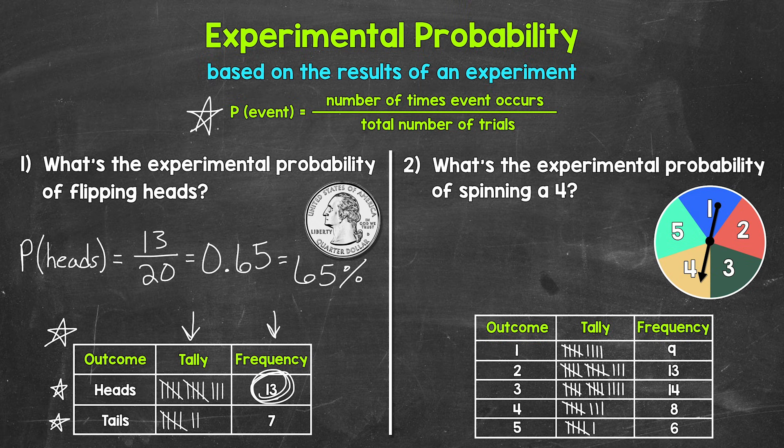And that's the experimental probability of flipping heads based on this experiment and the results. Now, you may be thinking, that can't be right. The probability of flipping heads is one half. It's a 50 percent chance. And that is true. But that's what we call the theoretical probability. That's what we expect to happen based on reasoning and math. This is the experimental probability. It's based on the results of the experiment.